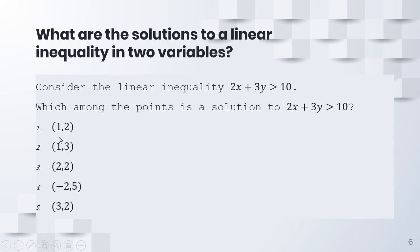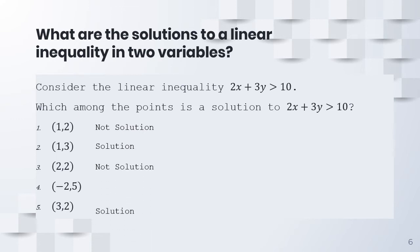I'll give you time to think about your answers, and just like before, if you have questions please comment below. For number 1, (1,2) is not a solution. (1,3) is a solution. Number 3 is not a solution. Number 4 is a solution. And then finally, number 5 is also a solution.